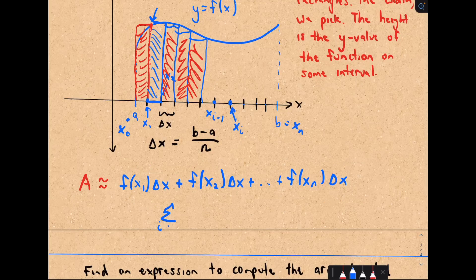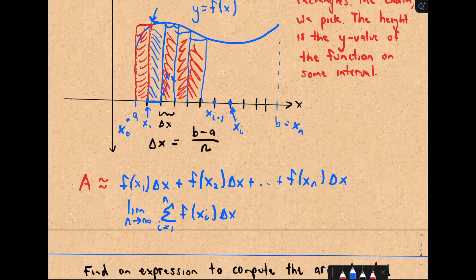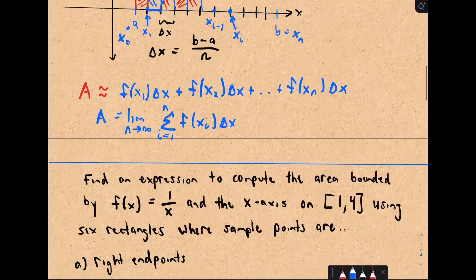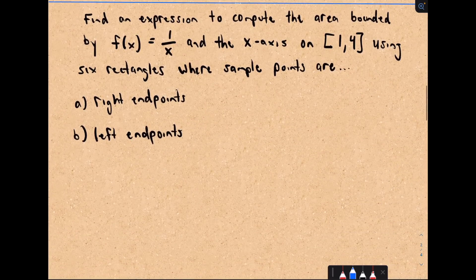That summation from i equals 1 to n of f of x sub i times delta x — if we use more and more rectangles, we let the limit as n goes to infinity. That's how we define the area. Computing this can be a little tricky, but that's going to be part of the magic of calculus — you'll see there's a nice easy way to do it. So let's look at a simple example.